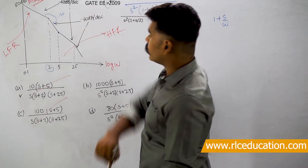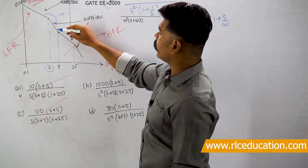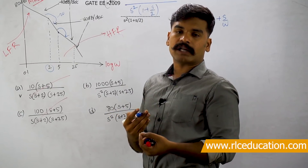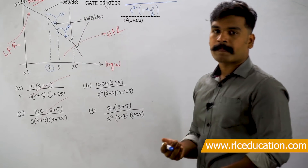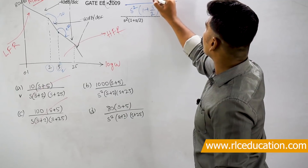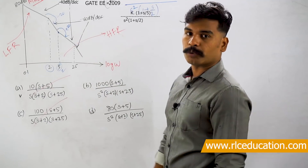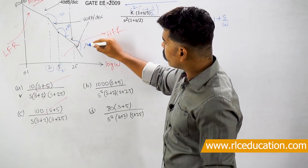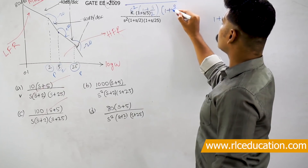At the next corner frequency, the slope changed from minus 60 dB per decade to minus 40 dB per decade — a change of plus 20 dB — which means there is a zero at that frequency. I write this zero as (1 + s/5). Then at the following point there is another change in slope from minus 40 to minus 60 dB per decade — again minus 20 dB per decade change — meaning one more pole, this time at omega = 25. I write this as 1/(1 + s/25).